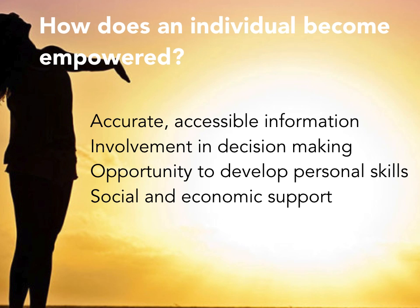So how does an individual become empowered? When they have access to accurate and reliable information, they improve their knowledge and understanding, and this increases their capacity to make safe decisions. For example, if you know about the effects of alcohol on your body, you're more likely to make a safe and healthy decision. Involvement in decision making, the opportunity to develop personal skills, and social and economic support are also important.